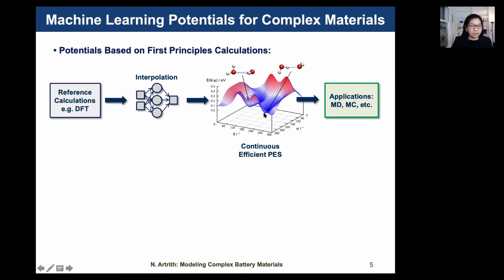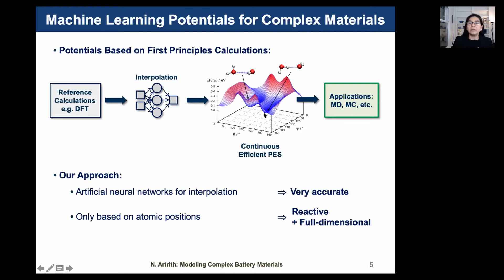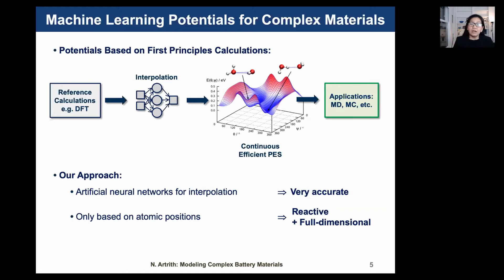Our approach uses neural networks for interpolation because they can be highly accurate. As descriptors or features for such models, we need only atomic positions, and they are reactive and four-dimensional. For the construction, it takes some effort and time to validate them to make sure they are really accurate enough for applications.